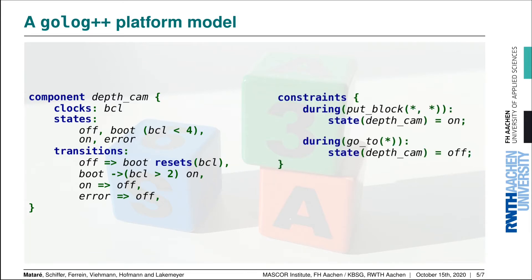Now the only thing that's missing from here is some kind of connection of these component states to the actions we want to execute. So we have these temporal constraints that say while we are executing a put_block action, we want the state of the depth_cam component to be on, and while we're executing a go_to action, we want the state to be off. This is basically it. This is all we need to make golog++ aware of the desired behavior of the component.